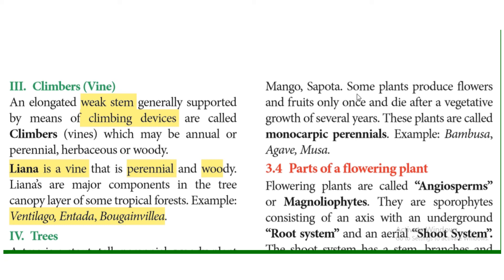Monocarpic perennials produce flowers and fruits only once and die after a vegetative growth of several years. During their life cycle, they produce an underground stem called a rhizome. The plant completes its vegetative growth before producing reproductive parts above ground, then completes its life cycle.